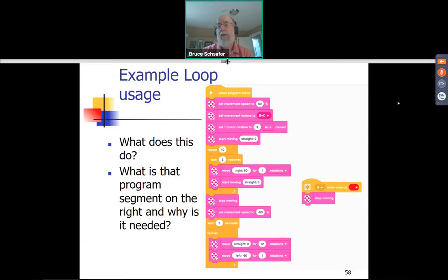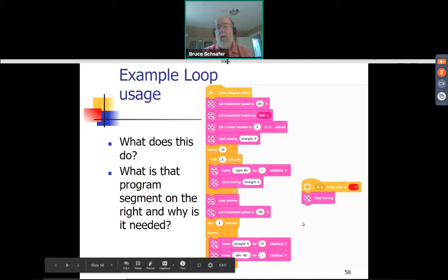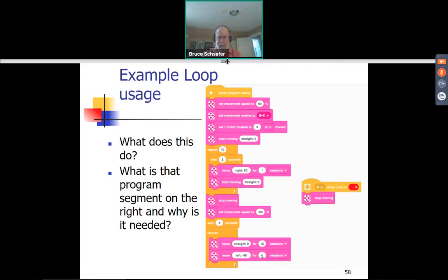When might the forever loop stop? On screen there's another stack of blocks: when the color sensor connected to port A sees red, stop moving. So even though the first stack repeats 10 times and then loops forever, as soon as the robot finds red it will stop movement — designed to break the forever loop. If there's no red on the mat, it will loop forever until the robot runs into something or the team presses the stop button. If navigation fails and red is never found, it will also loop forever.